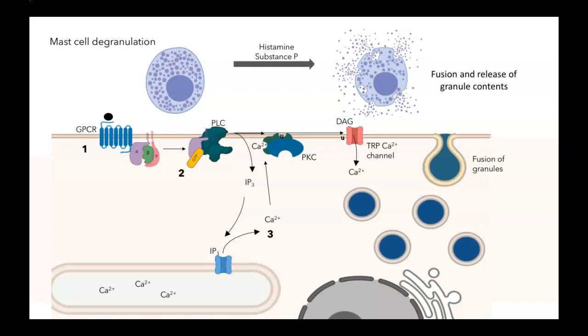DAG can bind to a particular type of calcium channel called the TRPC calcium channel and directly activate it, opening it up so even more calcium comes into the cell. Together, the calcium from the internal stores and that's entered through the TRPC channel lead to the fusion of these granules through calcium-mediated exocytosis.